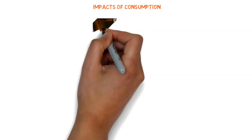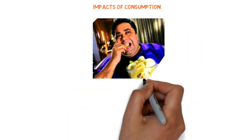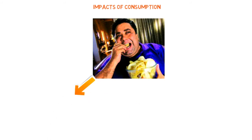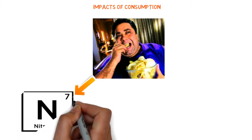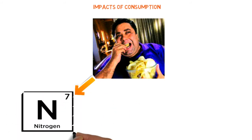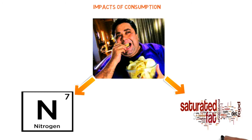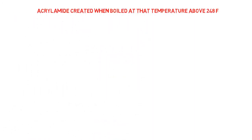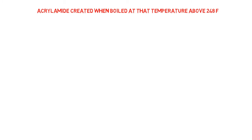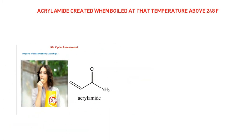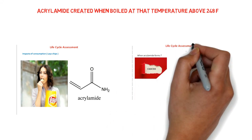Impacts of consumption. Mostly nitrogen is a poison which affects our body slowly. Saturated fat can increase our body weight in a short period of time. Acrylamide is a cancer-causing agent. When palm oil is heated above 248 degrees Fahrenheit, acrylamide is created.